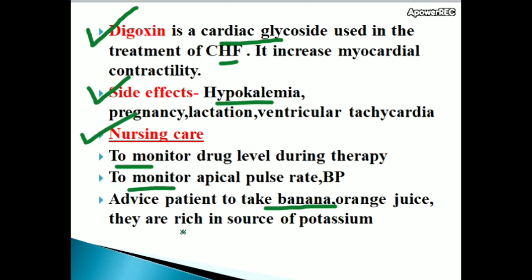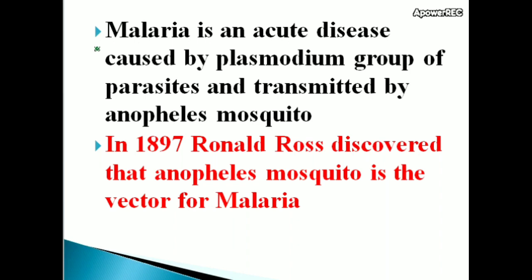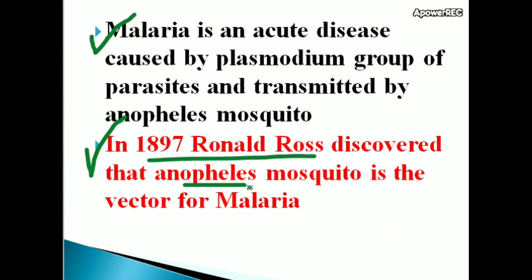A serious complication of acute malaria is fluid and electrolyte imbalance. Malaria is an acute disease caused by Plasmodium group of parasites and transmitted by the Anopheles mosquito. In 1897, Ronald Ross discovered that the Anopheles mosquito is the vector for malaria.